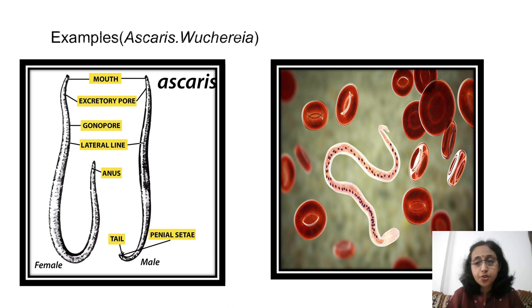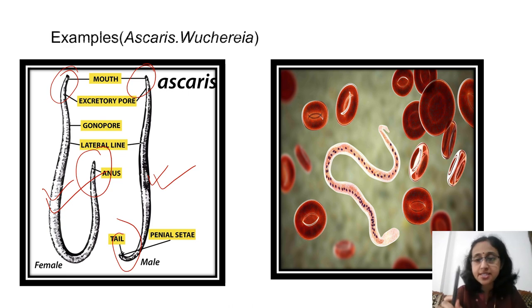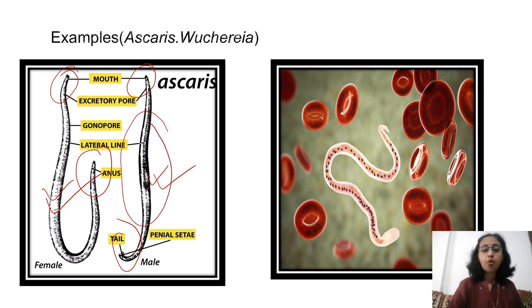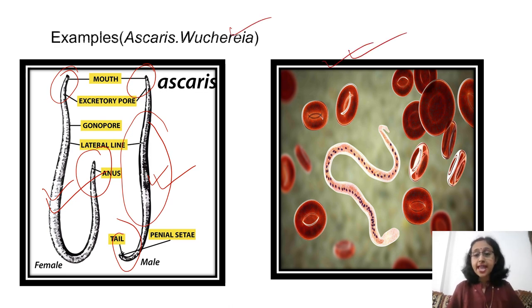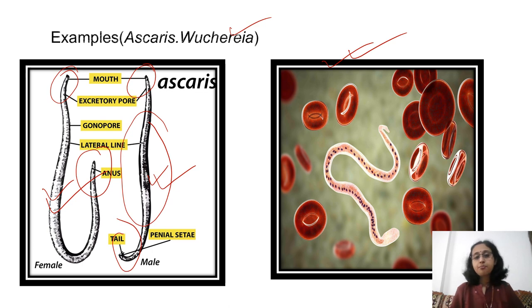Examples of Nematoda: First is Ascaris — you can see both ends tapering, and the male body is visibly smaller than the female. The second example is Wuchereria bancrofti, which causes elephantiasis in humans — a disease where the legs become swollen like an elephant's foot, generally transmitted through mosquito bites. These are the two main examples of the Nematoda group.